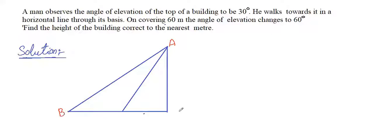Let ABC be the triangle where AC is the height of the building, and the man observes the angle of elevation at the top of the building. So the man is observing at place B, so angle B is 30 degrees.